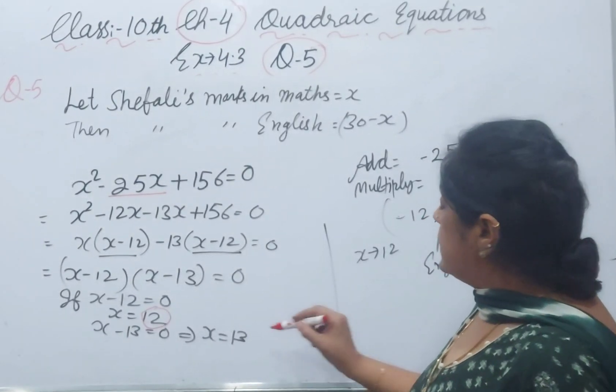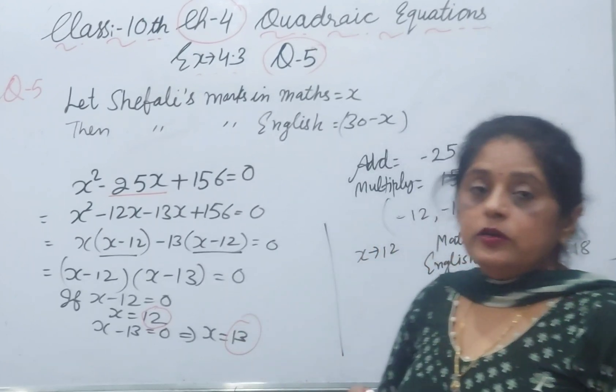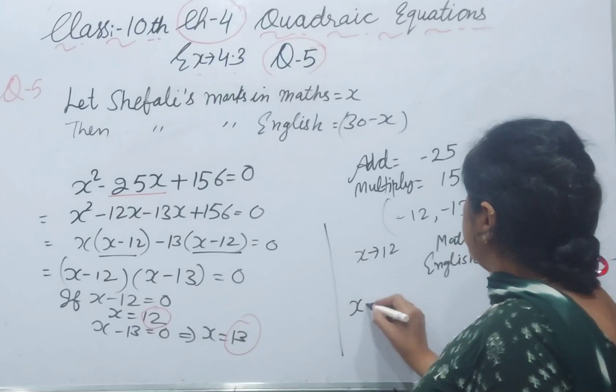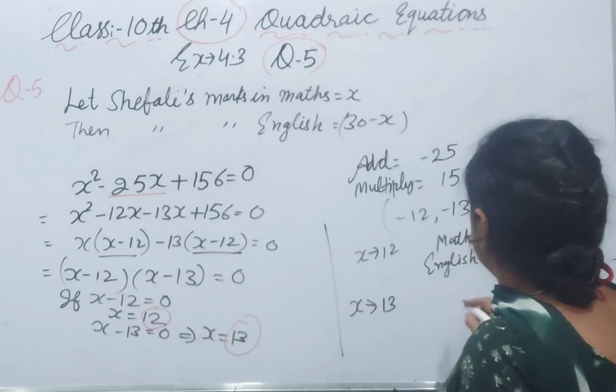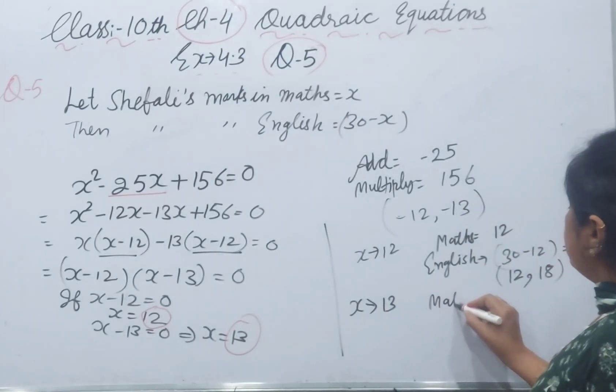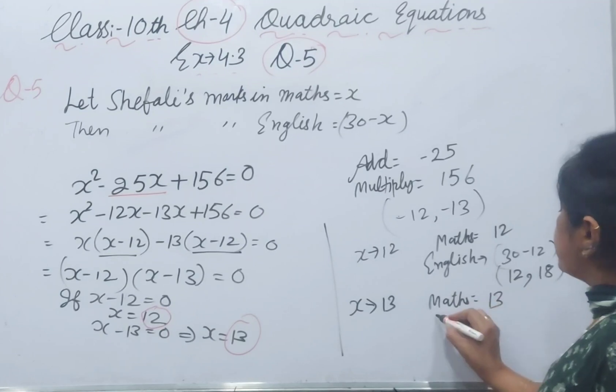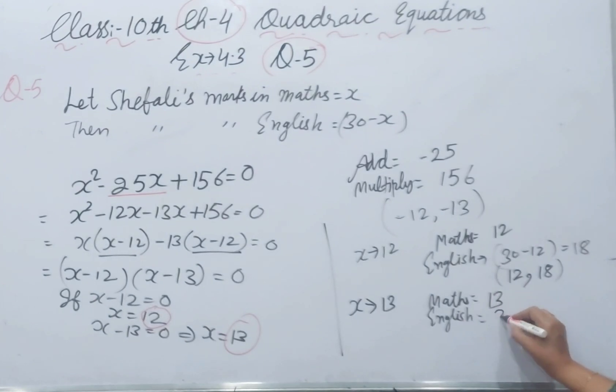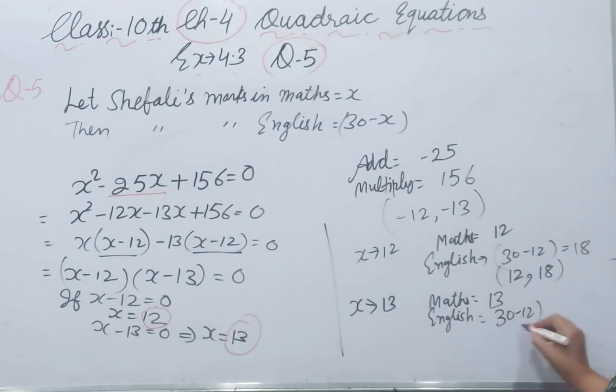If we take x equals 13, when x equals 13, math marks are 13, then English marks are 30 minus 13 equals 17. That means 13 and 17.